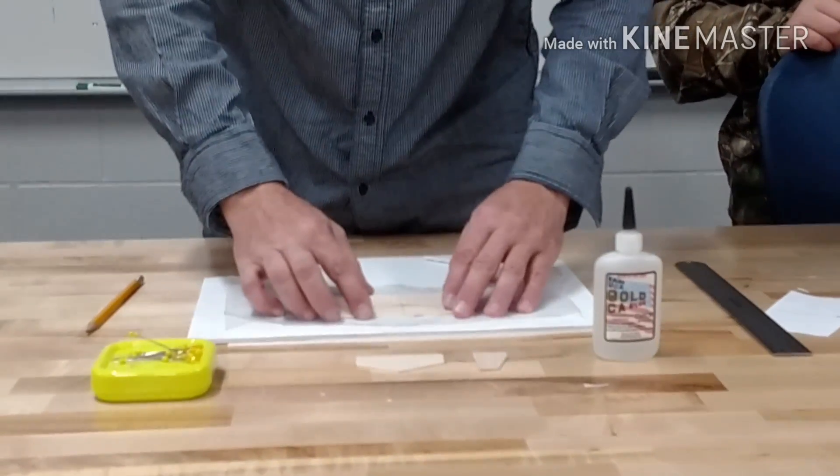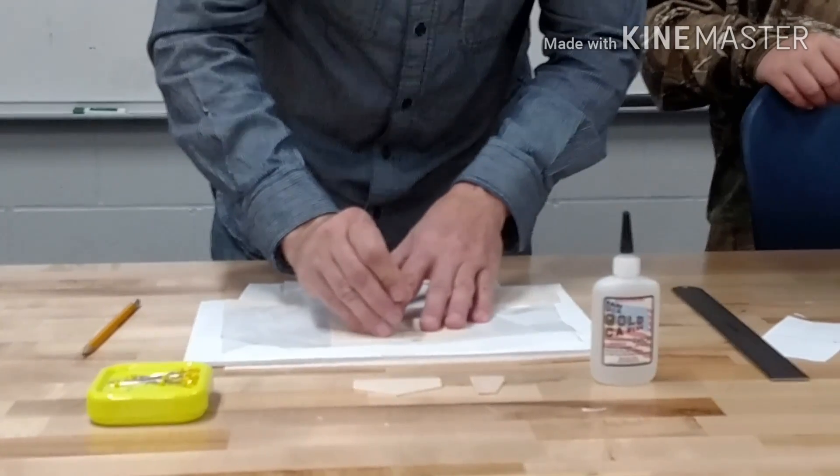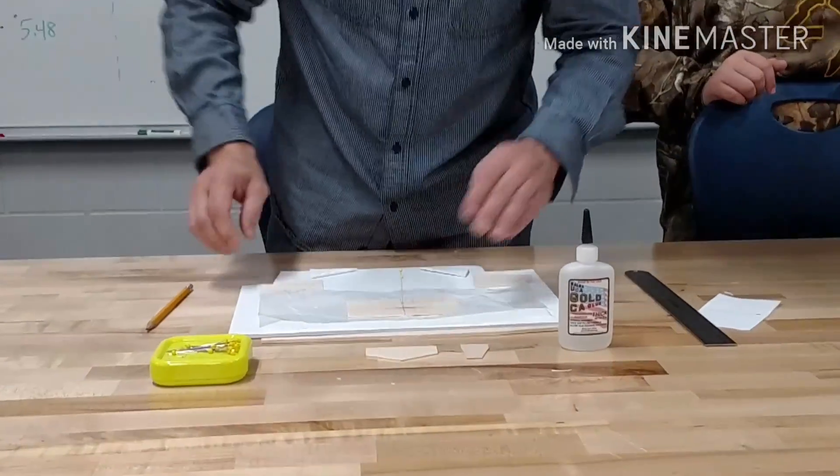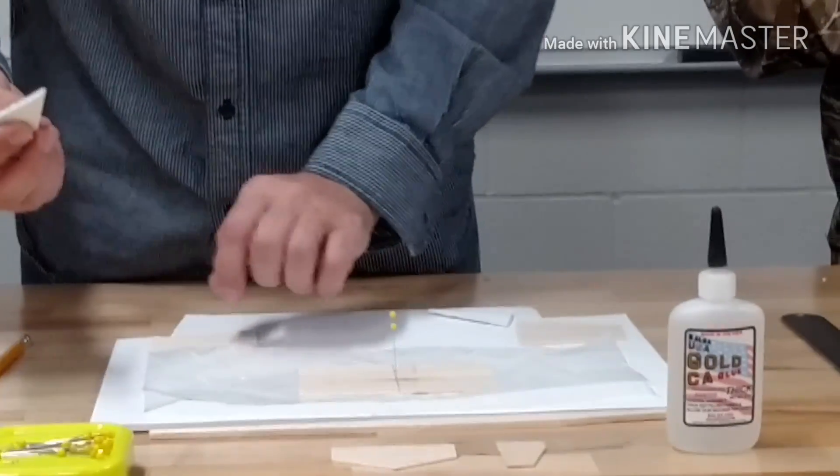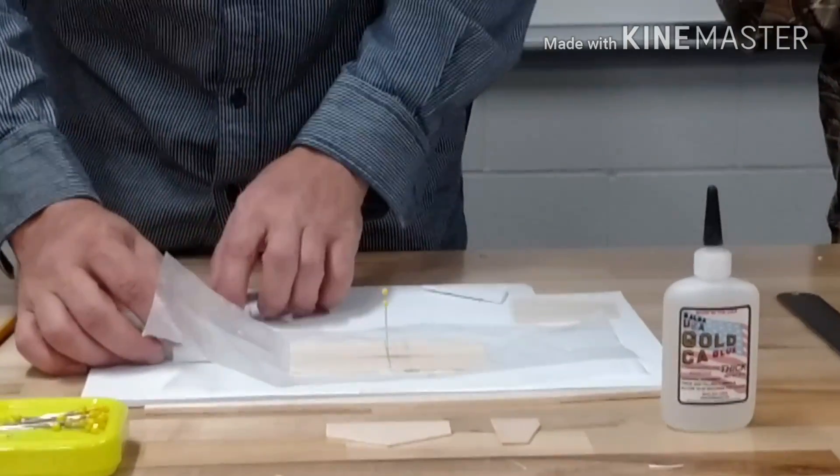I'm going to take my wing, and I'm going to take two pins right in the middle and pin my wing down so it doesn't move. And then I'm going to take my support piece and slide it underneath so it's under the wax paper as well.